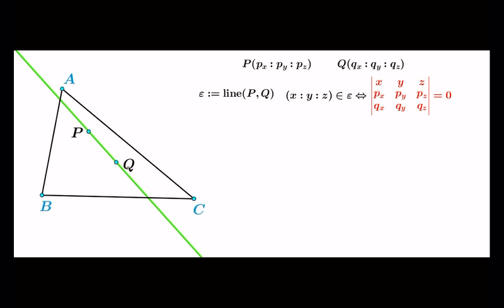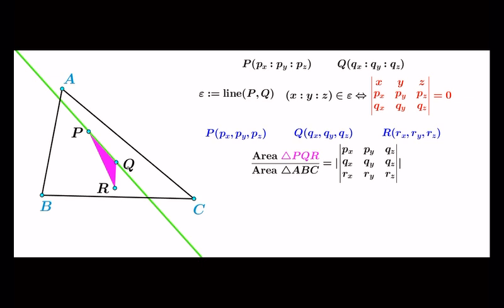Next, let us consider the points P and Q in normalized coordinates, and suppose we have an additional point R in normalized coordinates as well. The area of the triangle P, Q, R measured in units of triangles ABC is again given by a determinant. Also, the line epsilon-prime, which is parallel to epsilon and passes through R, which can be unnormalized, has an equation described again by a determinant.